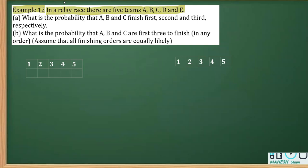Part (a) asks: What is the probability that A, B, and C finish first, second, and third, respectively? I've marked the positions 1 through 5. It's important to note that we are only concerned about the first three places.